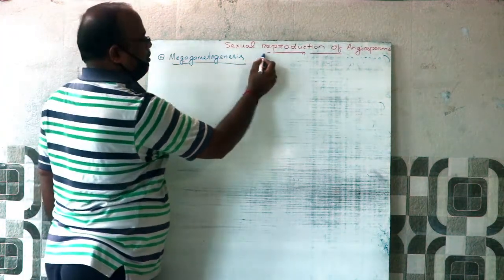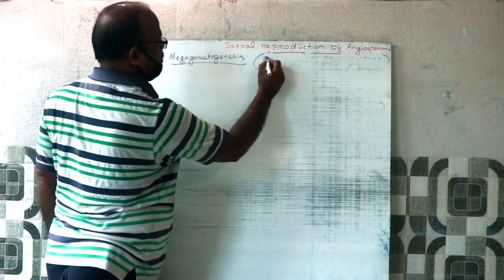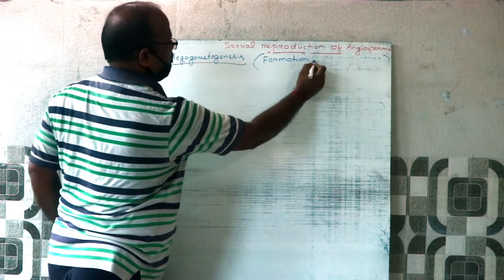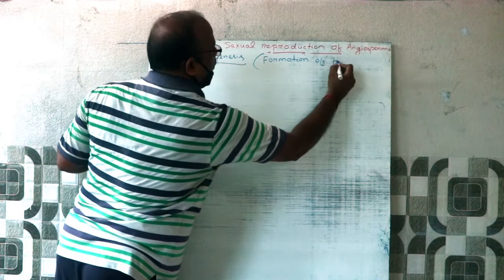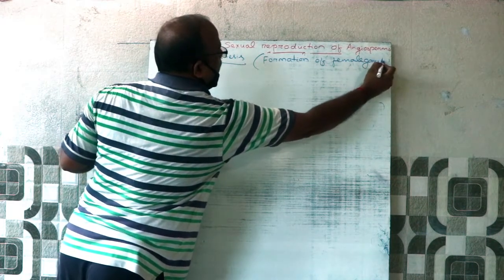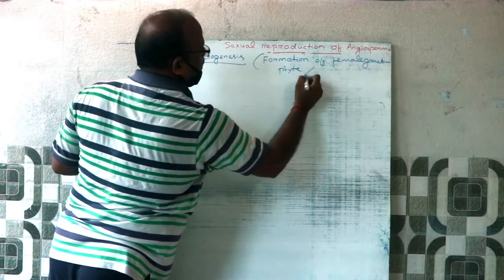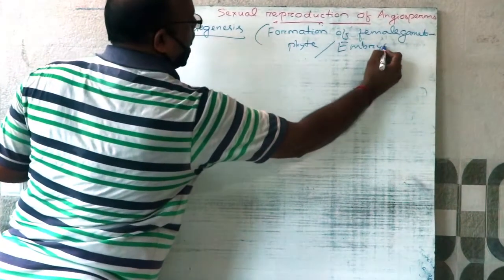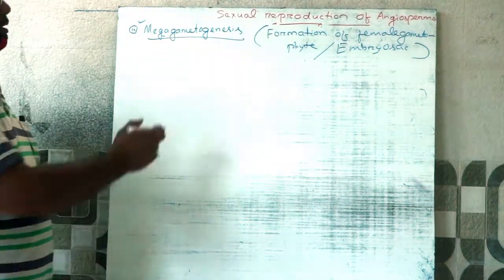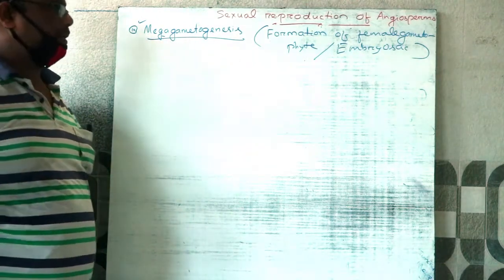Megagametogenesis is the process of formation of the female gametophyte or embryo sac. The process of formation of the female gametophyte or embryo sac is known as Megagametogenesis.